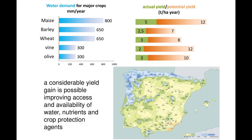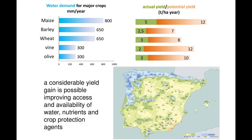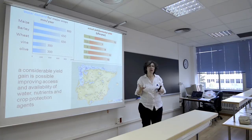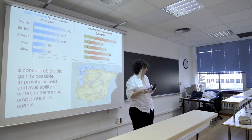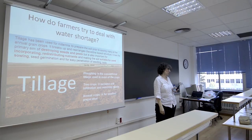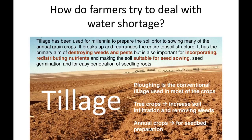We cannot continue trying to obtain more water because we are detracting it from other uses. Because this is not really suitable for this land, production of these crops is limited. Farmers try to be as close as possible to high production, but it is not possible under these conditions. How do farmers try to deal with water shortages? The response is tillage. A very dry year — more tillage. A very wet year — more tillage. This is the solution for everything.